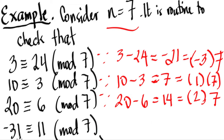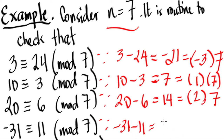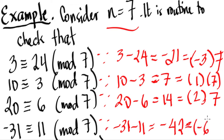Next: negative 31 is congruent to 11 mod 7. Let's verify: negative 31 minus 11 equals negative 42, and negative 42 is a multiple of 7 because negative 6 times 7 equals negative 42.